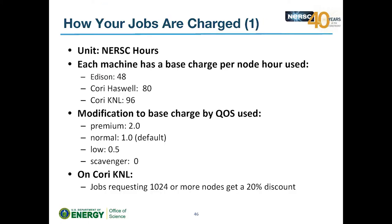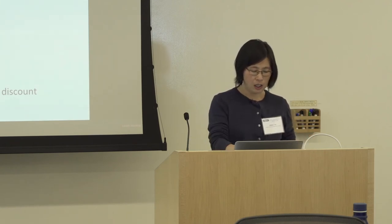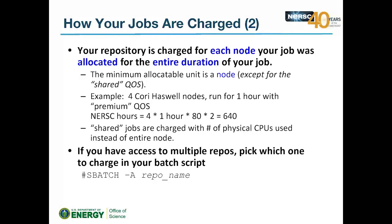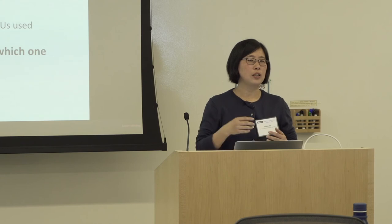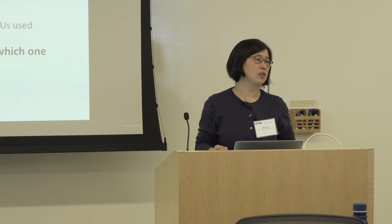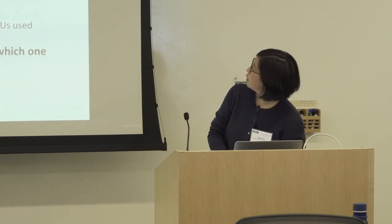Jobs are charged in NERSC hours. The base charge per node-hour is 48 for Edison, 80 for Cori Haswell, and 96 for Cori KNL. QoS multipliers apply: normal is 1x, premium is 2x, scavenger is free but very low priority. There is a 20% discount for jobs using 1024 or more nodes. For example, 4 nodes running 1 hour in premium on Haswell costs 4 × 1 × 80 × 2 = 640 NERSC hours. You're charged for all nodes requested — even if srun doesn't use all of them — but charged by actual walltime used, not the walltime limit requested.